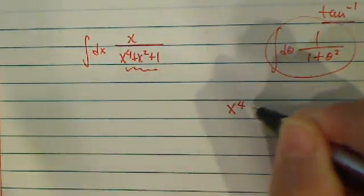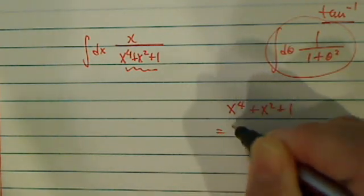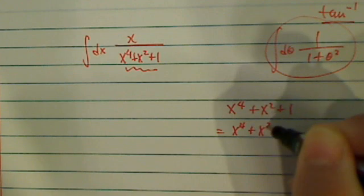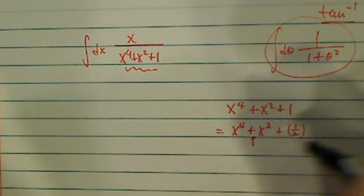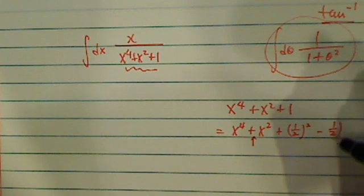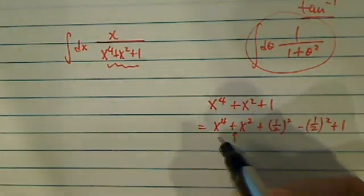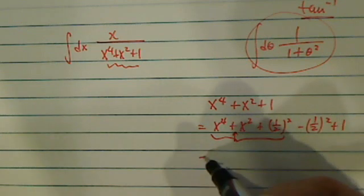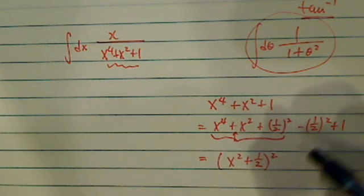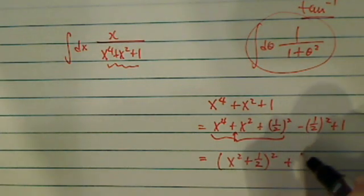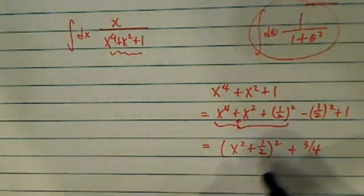Let's complete square on this first, x^4 plus x^2 plus 1. What I'm going to do is x^4 plus x^2, and then I'm going to take half of the coefficient here, square it, then I got to subtract it and add 1. So all I did is I'm going to regroup those three. I have (x^2 plus 1/2) squared, and over here I have 3/4. So here I completed square for me.